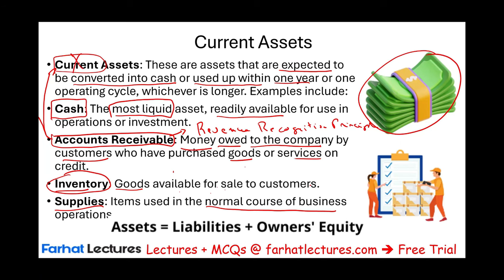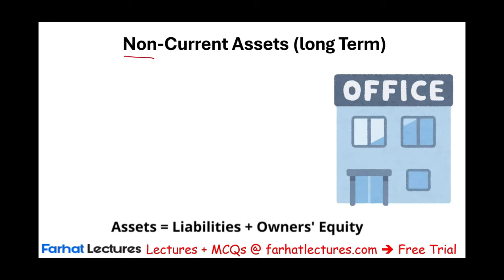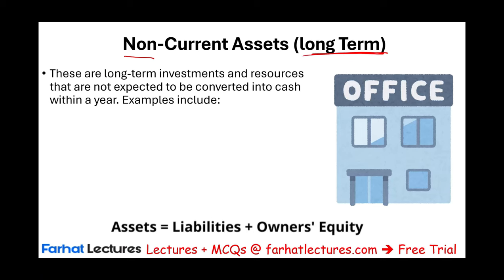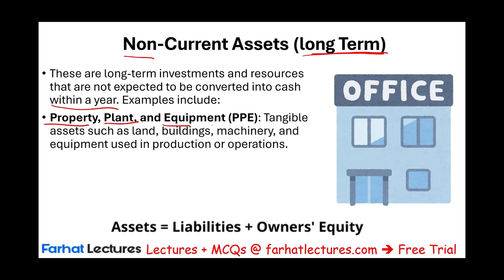Non-current assets are long-term — assets expected to stay with the company longer than a year. They're not expected to be sold or converted to cash. When we think of them, we think of property, plant, and equipment, or PP&E. Those assets include land, building, machinery, vehicles, warehouses, and equipment. When you buy a building or machinery, you expect it to service you for several years. These are tangible assets used in producing goods and services for operations.